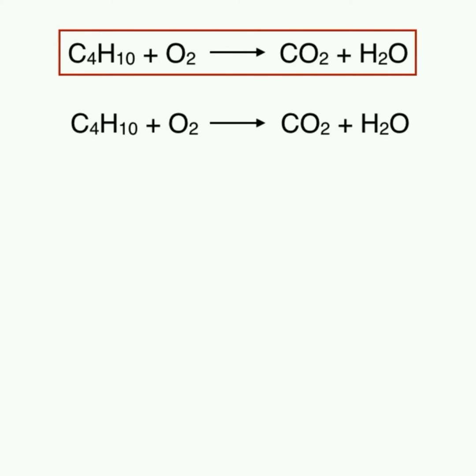To begin, let's take an initial tally of the elements. We have 4 carbons, 10 hydrogens, and 2 oxygens on the left side. On the right side, we have 1 carbon, 2 hydrogens, and 3 oxygens.